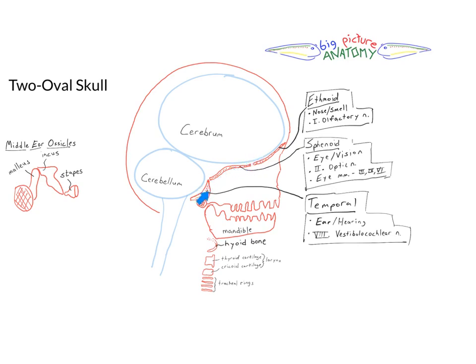And then more posteriorly, the temporal bone associated with the ear and hearing, having cranial nerve eight, or what I sometimes say three with a V so I can put it as one, two, and three with a V, or cranial nerve eight, the vestibulocochlear nerve, coming off of the brain into the temporal bone where the entire hearing apparatus is located.